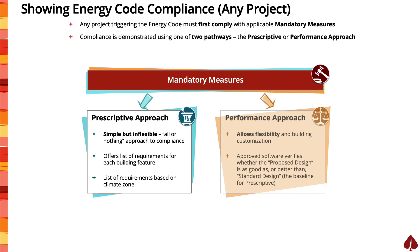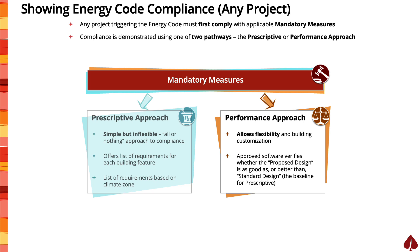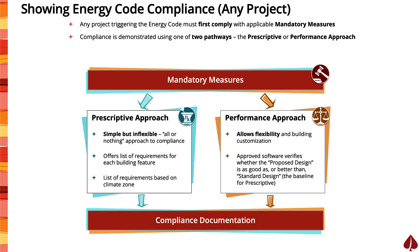The prescriptive approach offers a simple but inflexible way to show compliance. It uses project scope and climate zone location to provide a list of specific energy requirements. To comply, all of these requirements must be met — missing just one means the project does not comply. The performance approach is much more flexible and offers room for building customization, but it requires special software to determine if the building's overall proposed design is at least as good or better than the baseline standard design set by prescriptive requirements. Because the average homeowner will likely opt for the simplest and least costly approach, your checklists are designed to focus on permit applications submitted under the prescriptive approach.